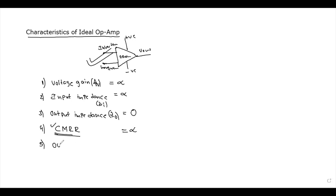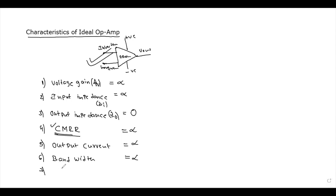Next, output current is also infinity. Next, bandwidth — bandwidth is also infinity. Next one: input offset voltage.